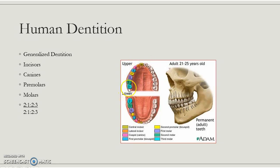When we write out the dental formula, we write it as 2-1-2-3 for incisor, canine, premolar, molar. Because it's the same on the top and the bottom, we draw a line and repeat 2-1-2-3. So if you're asked what the human dental formula is, this is it — 2-1-2-3 on both top and bottom. This is for adults. You don't need to recognize disarticulated teeth, but when they are in the skull you need to know which is which, whether by counting or general recognition.